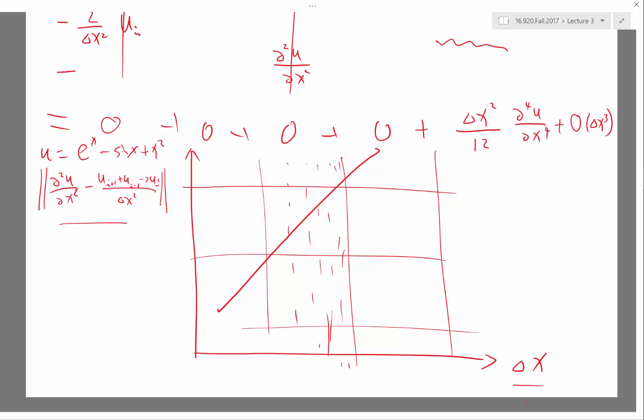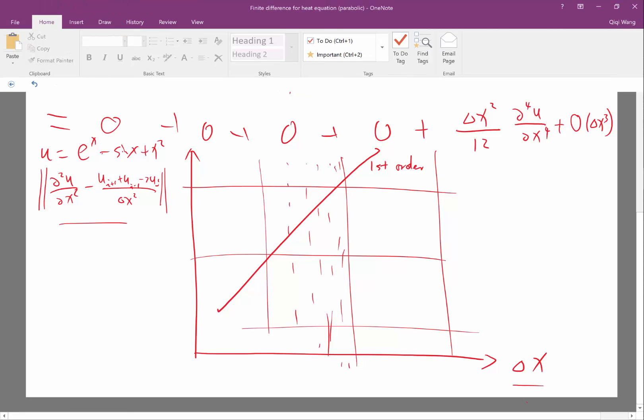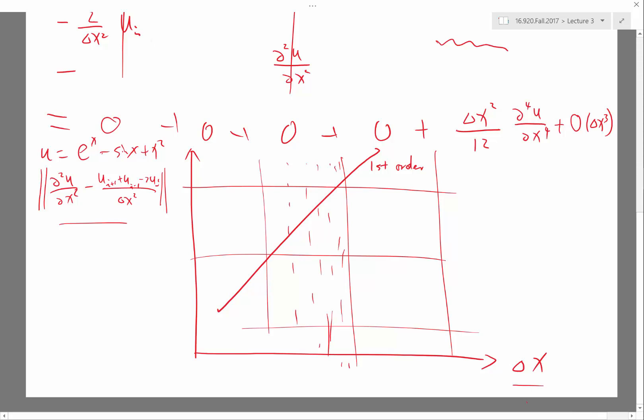You may only expect the line to be straight when your delta x is small enough. How small is small enough? It depends on a lot of things. But you should see when delta x is small enough, it goes down straight. So this is going to be a first-order scheme. Your slope of the line is equal to 1. That means a first-order scheme.